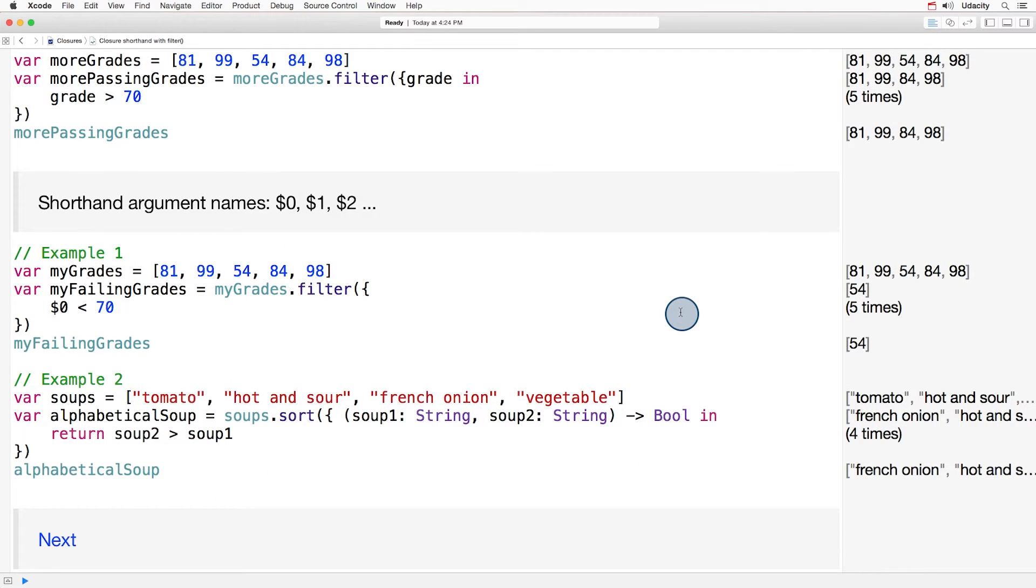Let's see all those shortcuts one more time. We'll go back to the alphabetical soup example from your quiz. The closure expression parameter and return types can be inferred. So we can take out string, string, and bool.